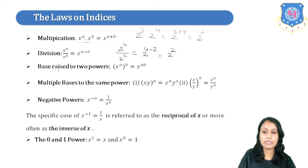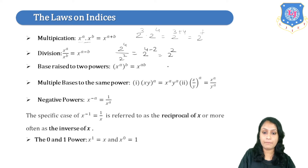The next law is raising to two powers: x raised to a, whole raised to b equals x raised to a times b. So we need to multiply the powers. For example, 2 raised to 3, whole raised to 4 — we multiply 3 and 4, giving 2 raised to 12.